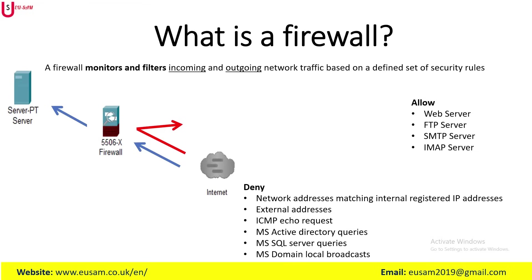The firewall is also configured to block any inbound traffic attempting to communicate with the organization's Microsoft SQL Server database. The last possible denial is to all MS domain local broadcasts — that is, the firewall is configured to block specific types of network traffic sent to all devices within a local network segment. As a network engineer specialist, you must be able to permit certain traffic and also deny certain traffic to prevent malicious attacks and unauthorized access from gaining entry to your network infrastructure.